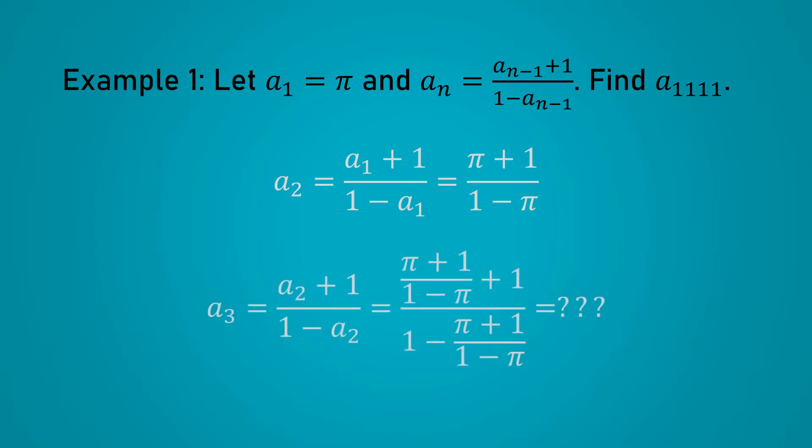The easiest way to start is by simply calculating the next few terms so that we better understand this sequence. So let's start by finding the next term, which is pi plus 1 over 1 minus pi. If we substitute again, A3 becomes this rather gigantic mess.